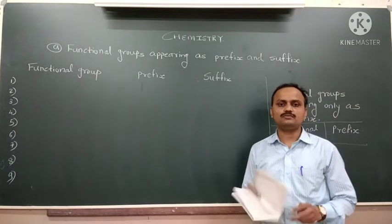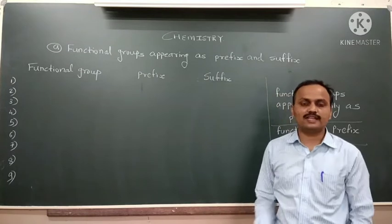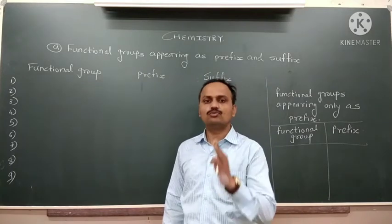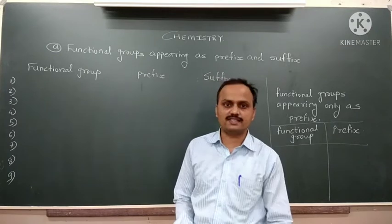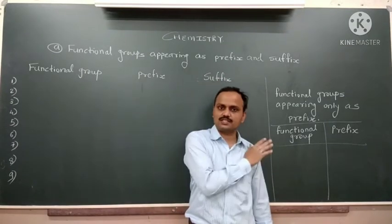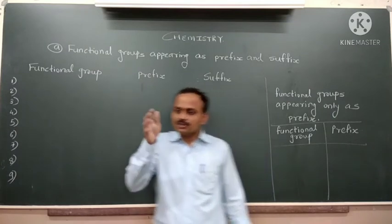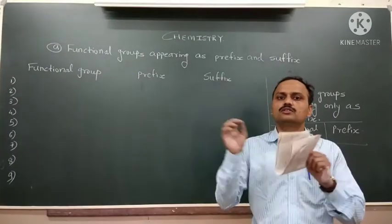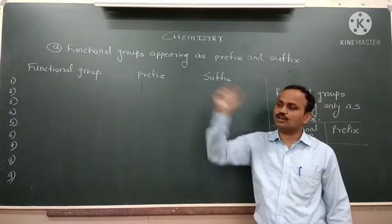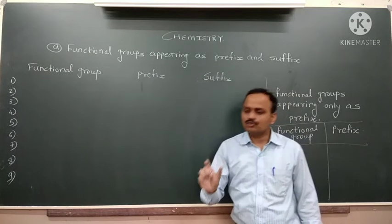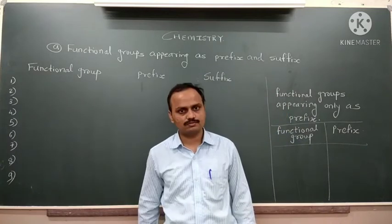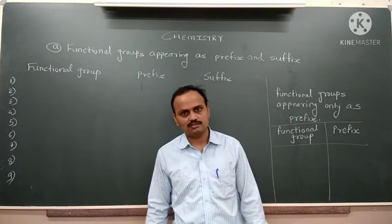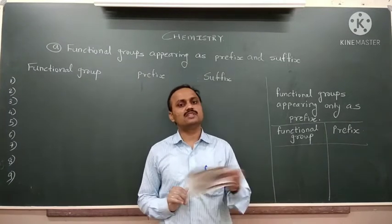We all know that when we write compounds for IUPAC nomenclature, we have to classify the compound as prefix, root, and suffix — meaning the initial part, the middle part, and the end part. First, we see the structure of the compound and check whether any substituent is present. Then we decide which is the substituent and which is the parent chain, and name each accordingly.